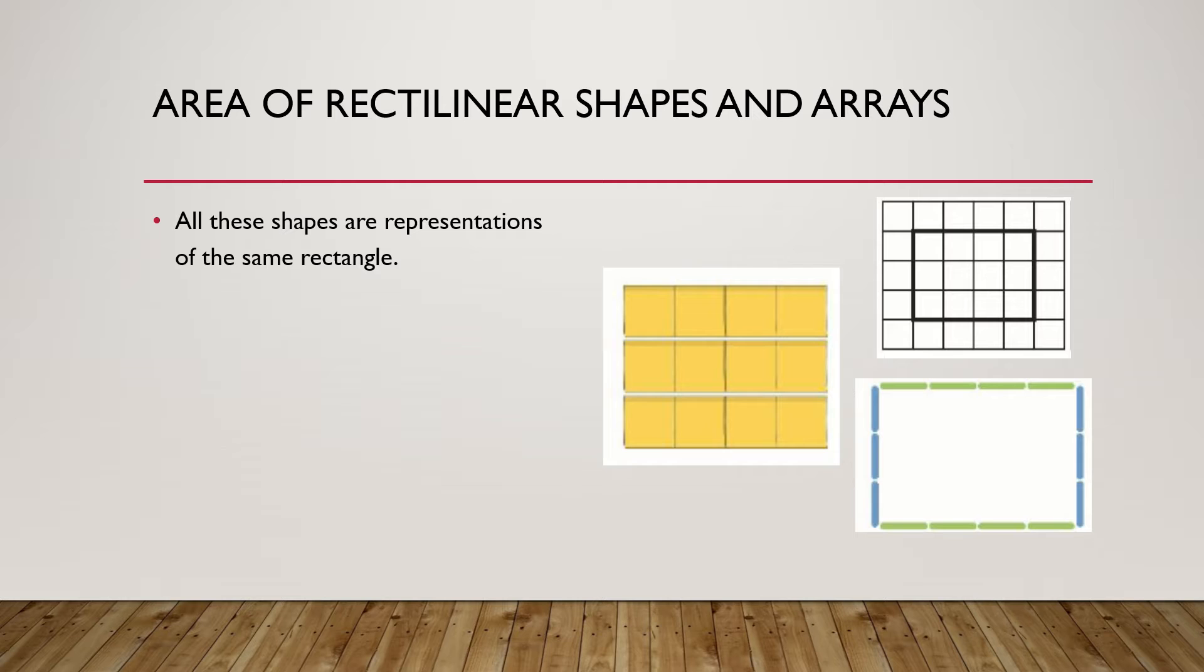So all these shapes, not just the one I showed you but the other three, they're all representations of the same rectangle. Now the length here is four squares, the width is three squares. Sometimes people might think that the width is four squares, the height is three squares, but this is the way I'm saying it today.